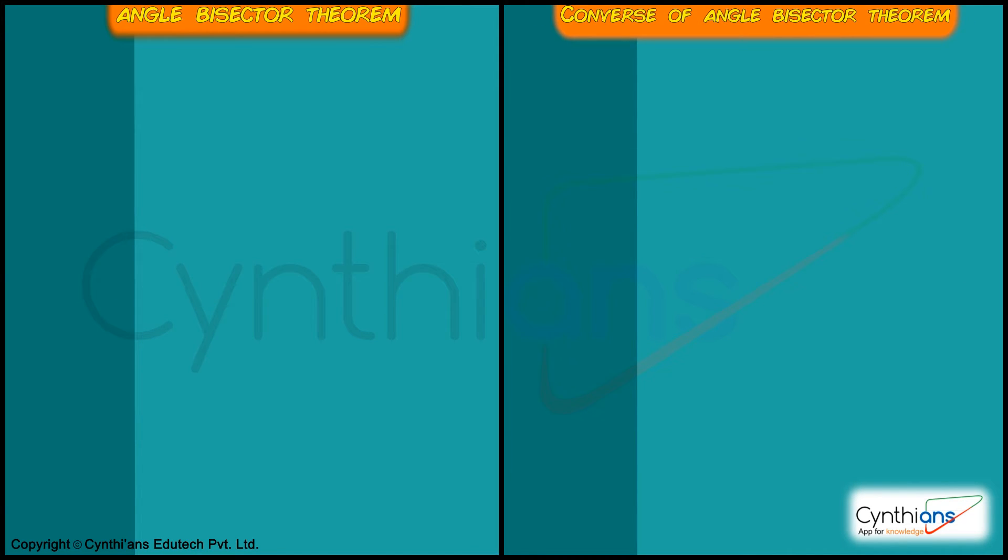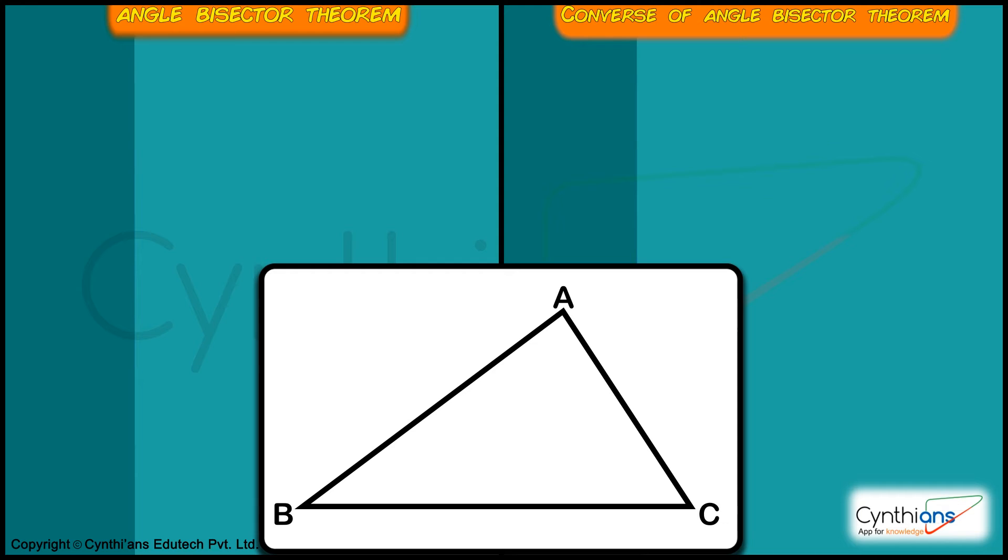For this we require a triangle, triangle ABC. And from angle B, let's take an angle bisector to the opposite side of that angle, that is side AC, and mark it as point D.